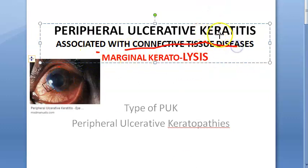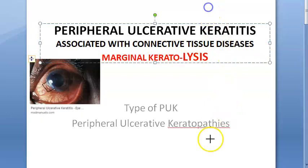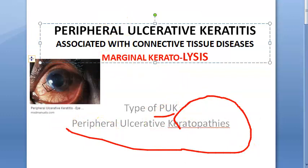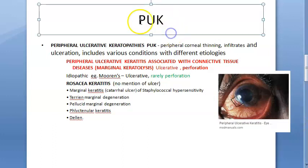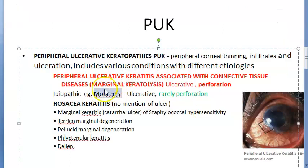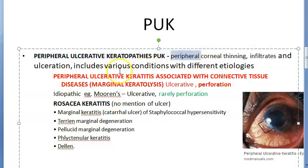Marginal keratolysis is caused by connective tissue diseases — things like rheumatoid arthritis and others. It is a type of PUK, that is peripheral ulcerative keratopathy. There are many types of peripheral ulcerative keratopathies, and marginal keratolysis is just one of them. The condition involves peripheral corneal thinning, infiltrates, and ulceration.